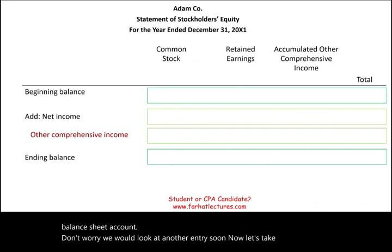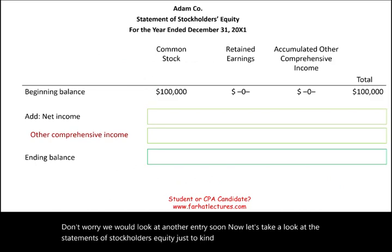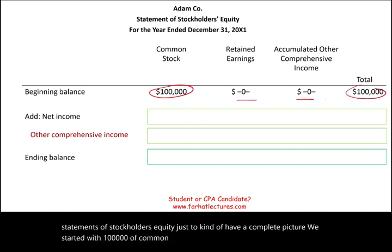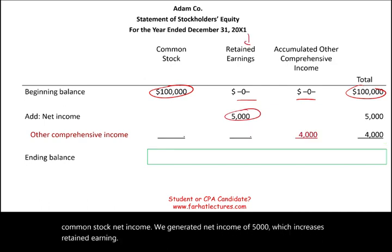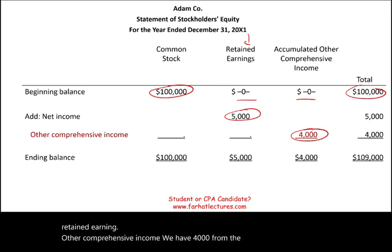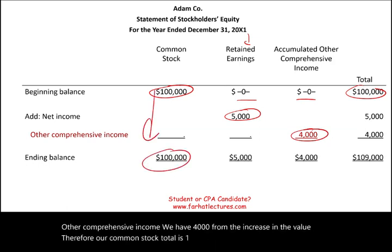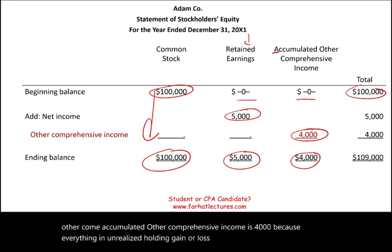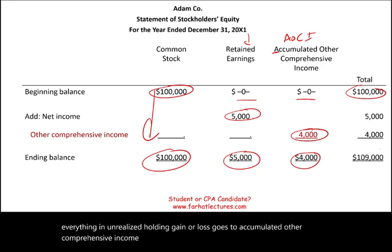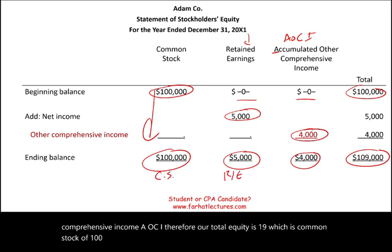Looking at the statement of stockholders' equity: we started with $100,000 of common stock, generated net income of $5,000 which increases retained earnings, and have $4,000 from other comprehensive income. So common stock totals $100,000, retained earnings $5,000, and accumulated other comprehensive income $4,000 — because everything in unrealized holding gain or loss goes to AOCI. Total equity is $109,000.